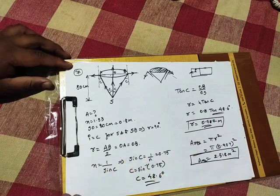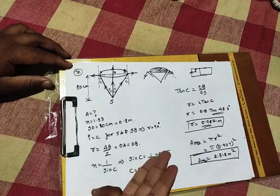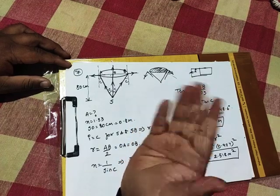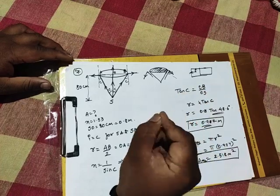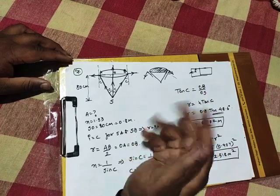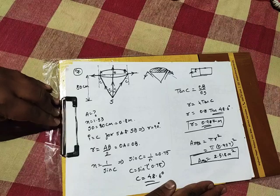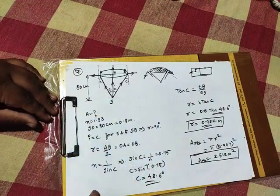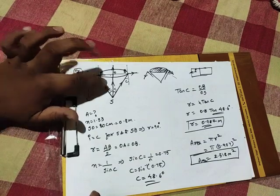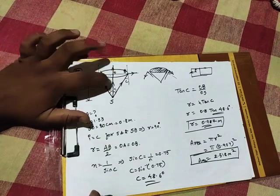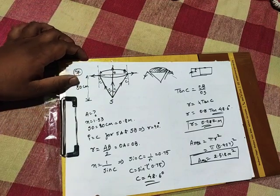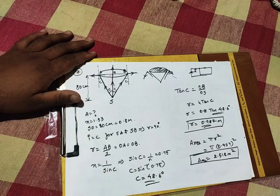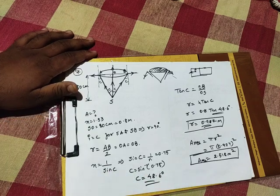I hope these sums are clear. Practice similar problems from Dinesh and your legends book — 3 to 4 sums of the same type. This is a very important kind of problem at CET and NEET level. The key formula is R equals h tan C. Thank you.